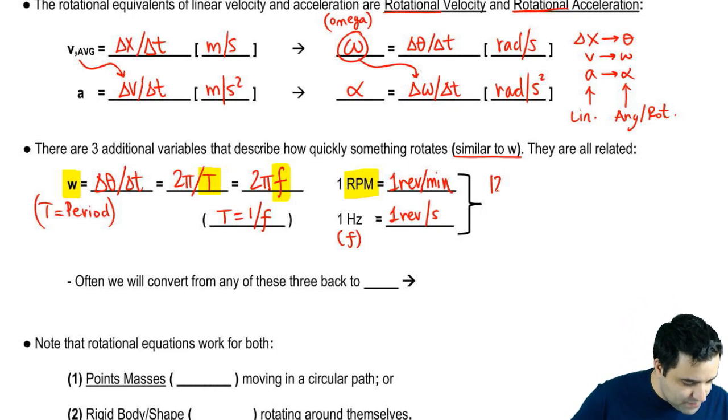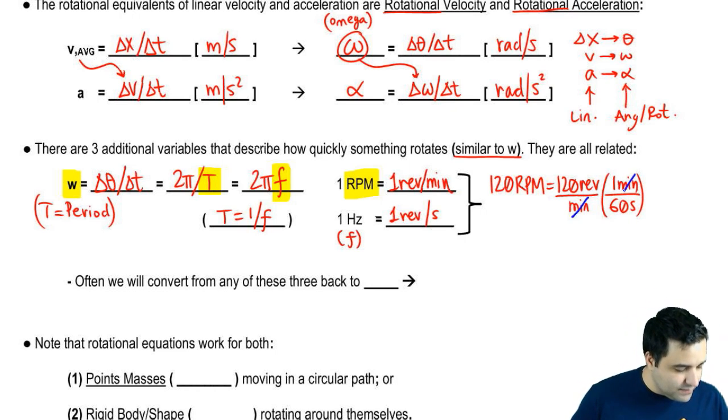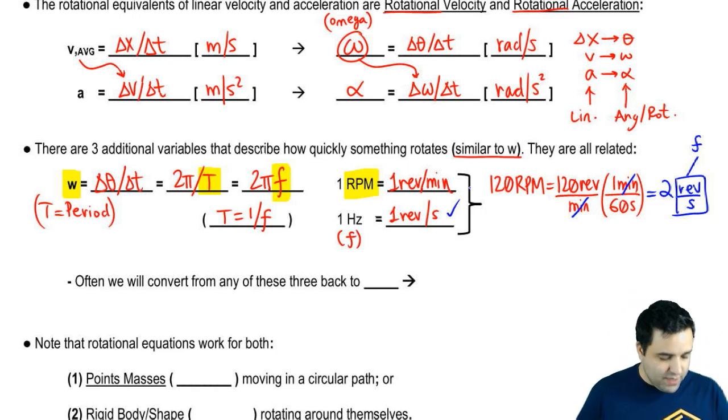For example, if I tell you something spins at 120 RPM, RPM is simply 120 revolutions per minute. And what I can do is I can convert this into seconds by dividing by 60. One minute equals 60 seconds. 120 divided by 60 is 2, so I end up with 2 revolutions per second. Revolutions per second is frequency. So if you have RPM, you can convert to frequency by dividing by 60.